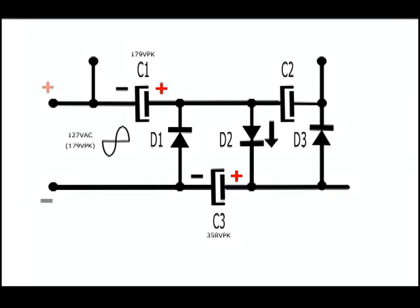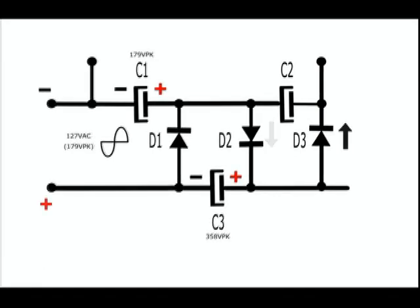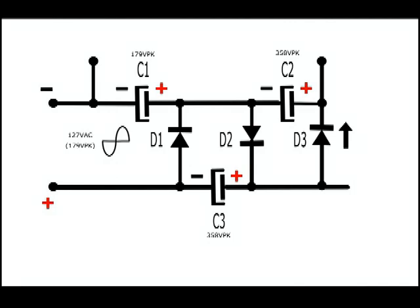When the AC polarity is reversed again, this time the opposition of the charge of C1 gives the effect of the charge of C3 being subtracted from the voltage stored in C1, since it opposes to it. So diode D3 charges C2 at 358 volts. By doing this, the circuit behaves as a voltage tripler.